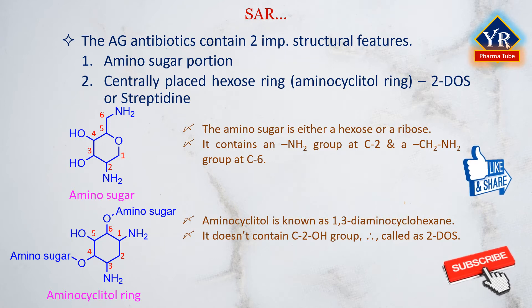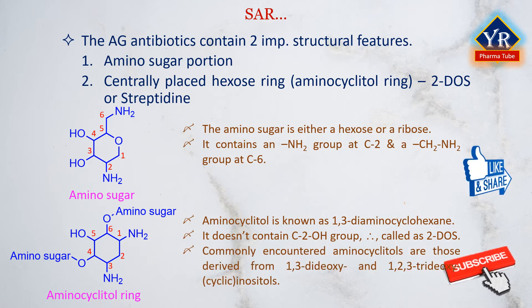Usually, the hydroxyl groups present at the 4th and 6th positions are bound to amino sugars via glycosidic linkages. The aminocyclitol ring is present mostly at the center of all aminoglycosides, except in streptomycin where it is present at one of the terminal ends. It is always bound to two or more amino sugars at C4 and/or C6 positions via a glycosidic linkage. The most commonly encountered aminocyclitols are those derived from 1,3-dideoxy and 1,2,3-trideoxycyclic inositols.